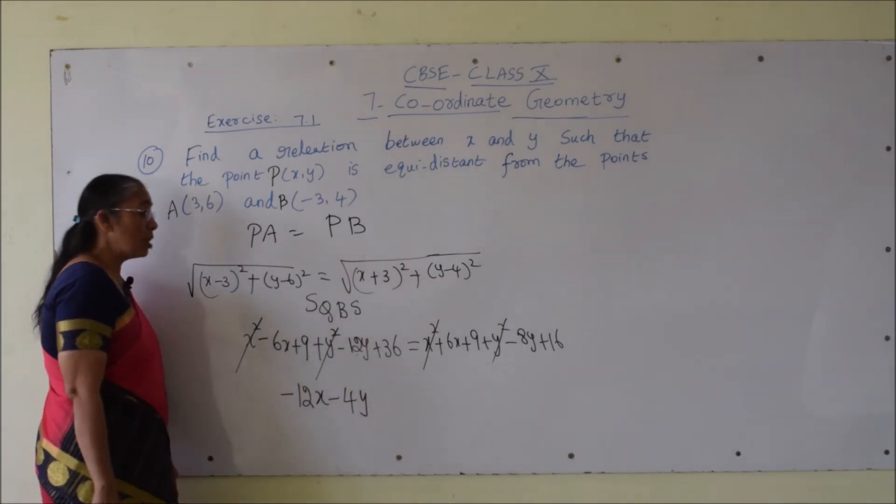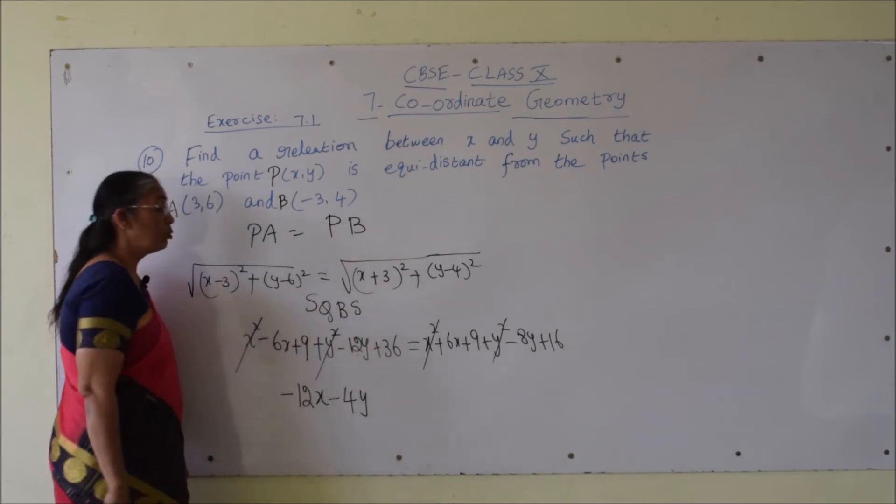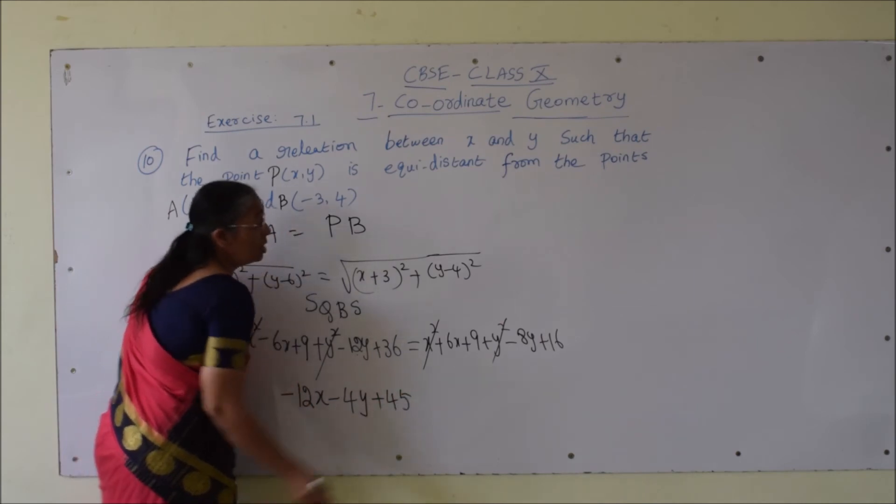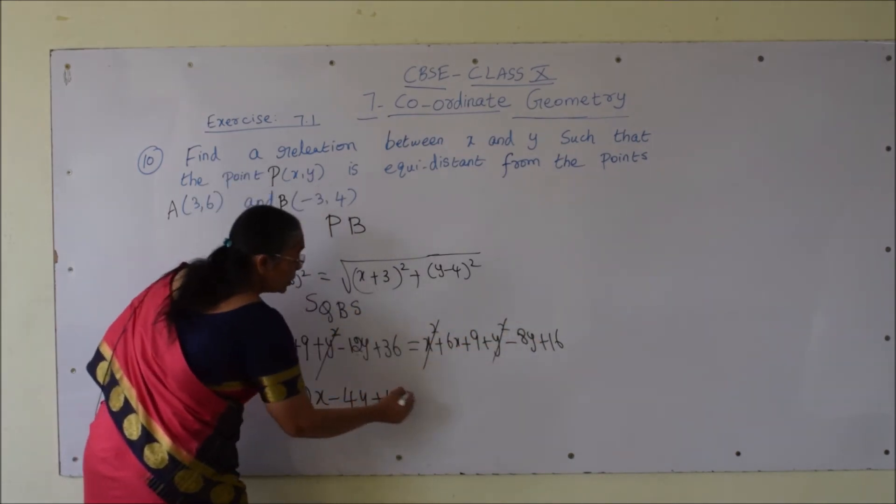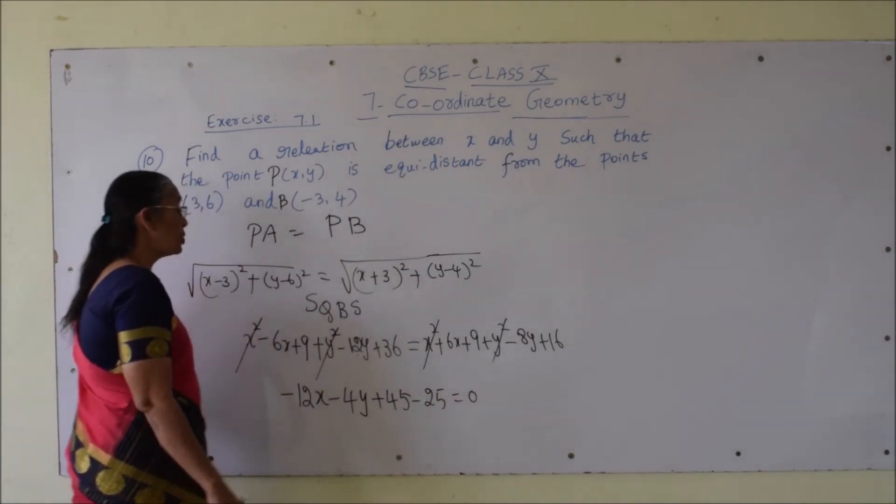Let us check the constant term. Here 36 plus 9 is 45. I am bringing to left hand side, minus 25 is equal to 0.